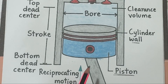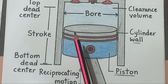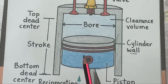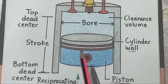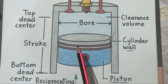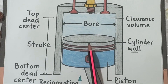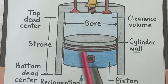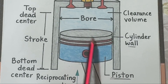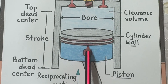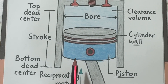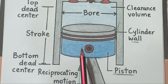The piston is a cylindrical component that fits snugly inside the cylinder. It moves up and down — that's called reciprocating motion. The piston's job is to compress the air-fuel mixture and then transfer the explosion's power to the crankshaft through the connecting rod. When the piston moves upward, it compresses the air-fuel mixture; moving downward, it delivers the power stroke. This up and down motion repeats hundreds of times every second while the engine is running.